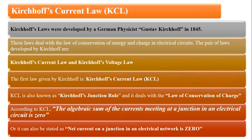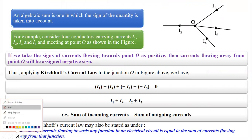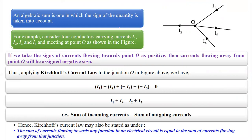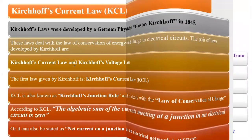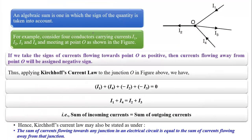So this is what KCL — Kirchhoff's current law — is. It is also known as Kirchhoff's junction rule and it basically signifies the law of conservation of charge. It states that at any junction in a given network, the total charge is conserved, or the total electric current at any junction is zero. Now, what is an algebraic sum? We have mentioned the algebraic sum — it is the sum of various quantities in which we have also considered the direction along with magnitude.